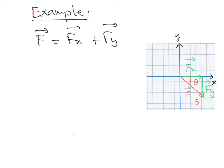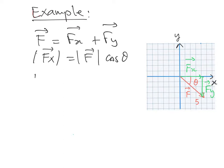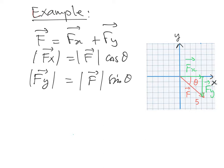Using the magnitude and the right triangle with basic trigonometry, we can write that the magnitude of Fx equals the magnitude of F times cosine theta, because Fx is adjacent to theta. And the magnitude of Fy equals the magnitude of F times sine theta, as it is the opposite side.